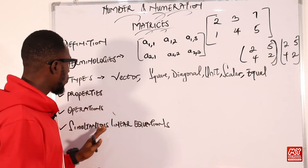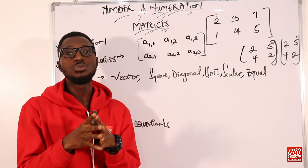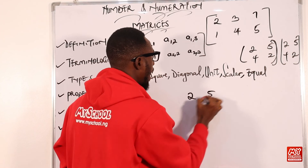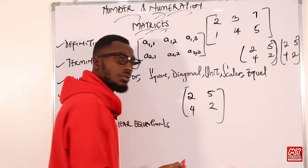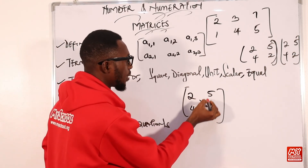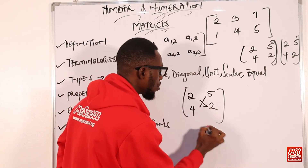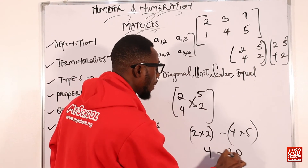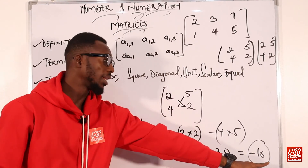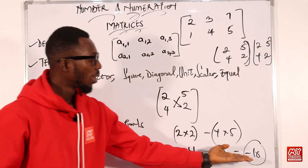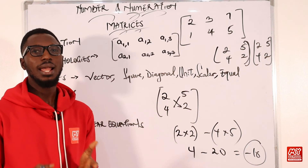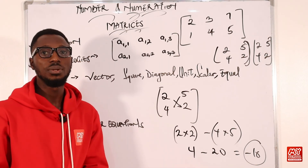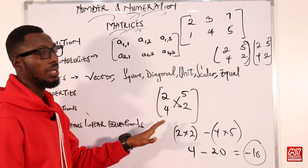Determinants are values that you can use to represent an entire matrix. For example, with a 2×2 matrix of two, five, four, two — you multiply diagonally: two times two, minus four times five. That gives four minus twenty, which equals negative sixteen. That is the determinant of this matrix. With determinants I can tell if a matrix is singular or non-singular, and determine whether the inverse of a matrix exists.